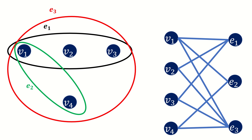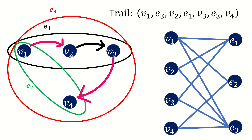As an example, in this hypergraph, v_1 e_3 v_2 e_1 v_3 e_3 v_4 is a trail. Notice that in the incidence graph, it's also a trail.